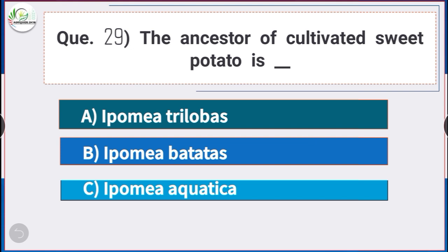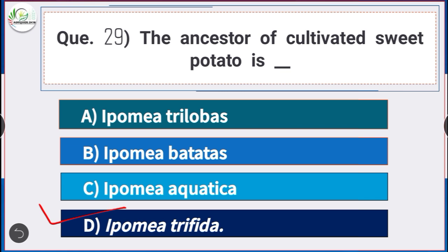Question number 29: The ancestor of cultivated sweet potato is — answer option D — Ipomoea trifida. The ancestor of cultivated sweet potato is Ipomoea trifida.